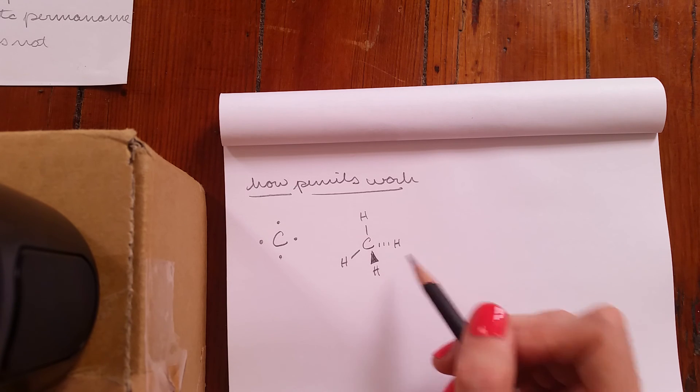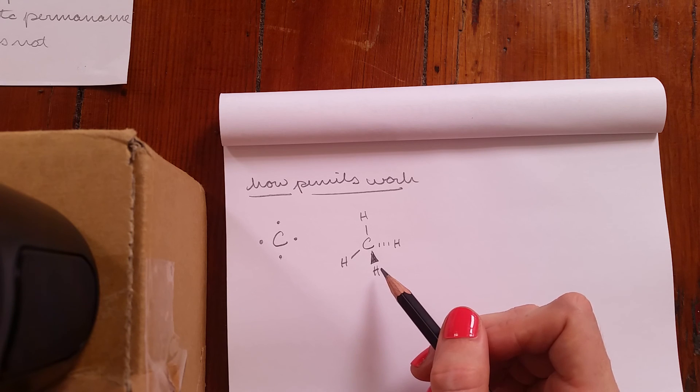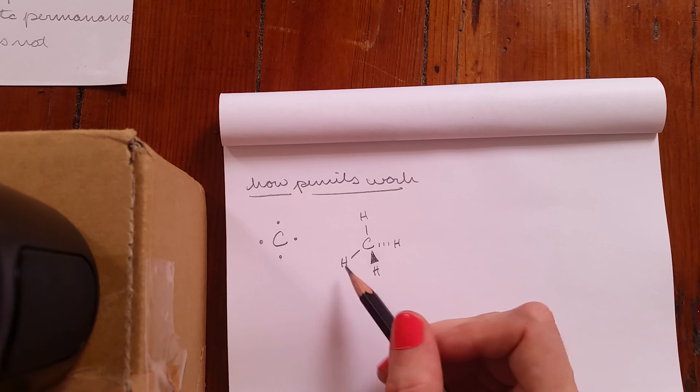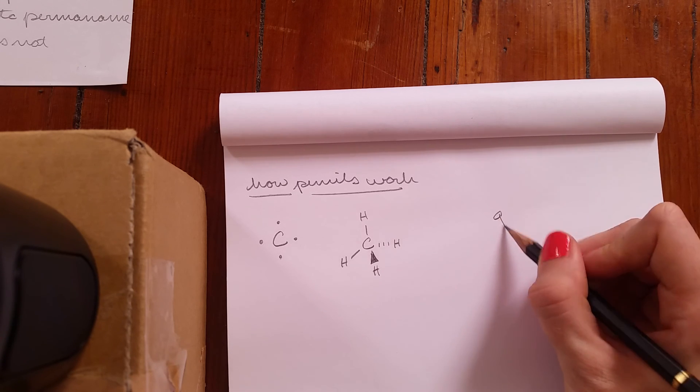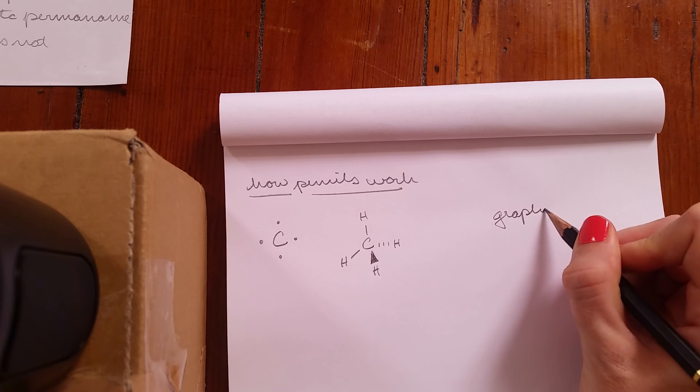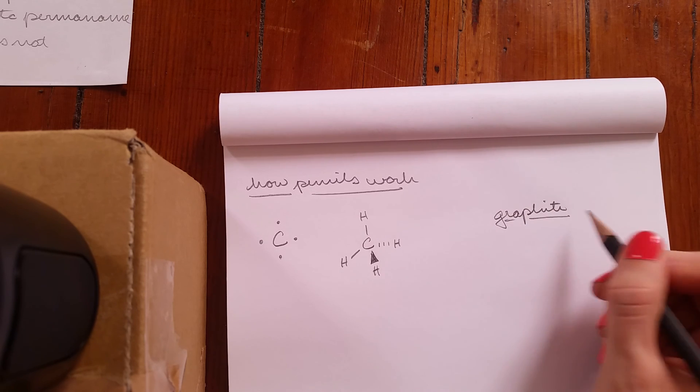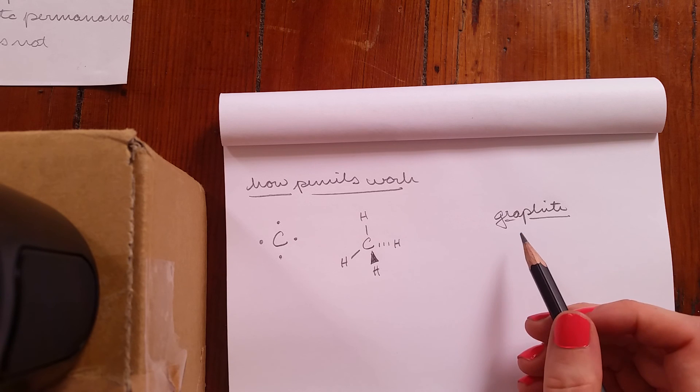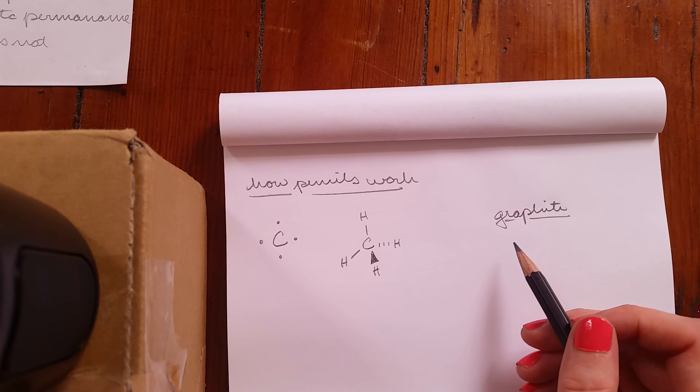However, when carbon forms graphite, that's not the case. Graphite is a three dimensional structure, but it's made up of two dimensional layers of carbon.